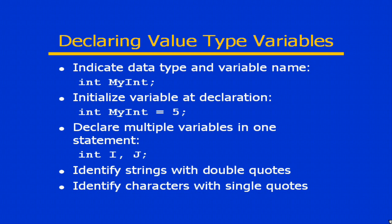If you are working with string values, make sure you use double quote characters to identify those values. So if it is a string variable, the value should be double-quoted. For characters, we identify those values using single quotes. We will get more into strings in level two, since strings are classes all of their own and are a subject for another day.